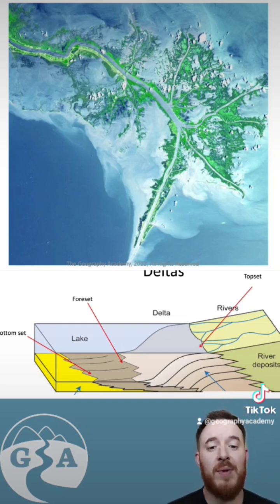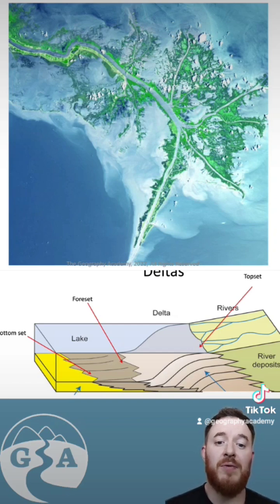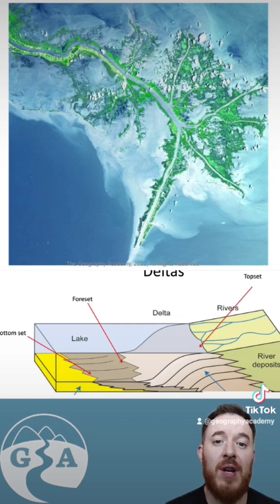There are two other influencing factors aside from the river's velocity, and that is the influence of tide and waves. Depending on which is more dominant ends up determining the shape of the delta.